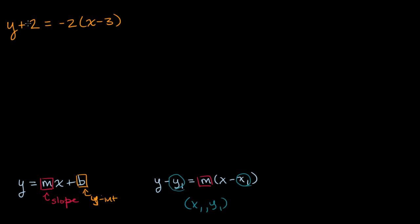So let's look at our original example. It might immediately jump out at you that this is actually in point-slope form. I see I have a minus x₁, so x₁ would be three. I have my slope here, and that answers our question — our slope would be negative two.